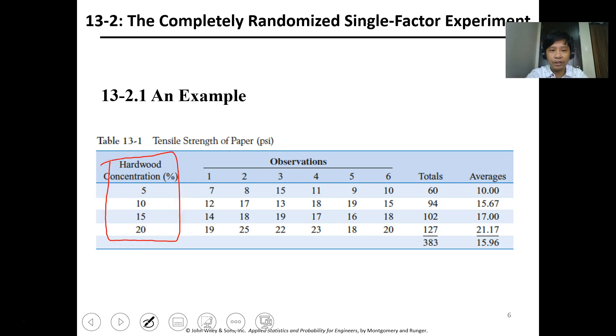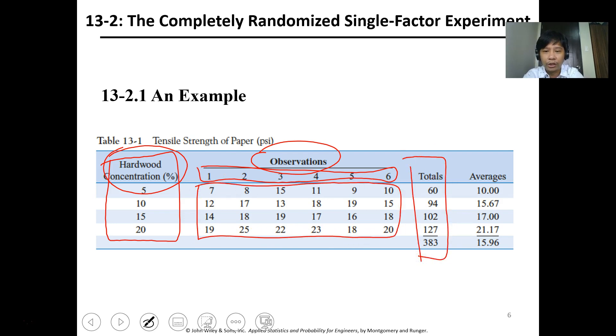Usually you tabulate the data—it can be arranged by row or by column, it's up to you, but make sure you have proper labeling. For this one, these are the observations. In six samples, these are the data, and we compute the total per row, the total of totals, the average per row, and the average of all.